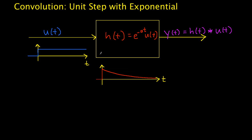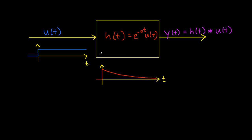To motivate this problem, I've drawn a block diagram of a system. The system itself has an impulse response h of t. You can see it's a decaying exponential and for values of t less than 0, it has a value of 0. The input to the system is the unit step function u of t, which is 0 until t gets to 0 and then it's 1. Our goal is to compute the output of this system in response to this unit step.